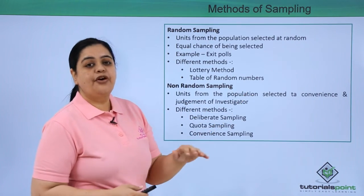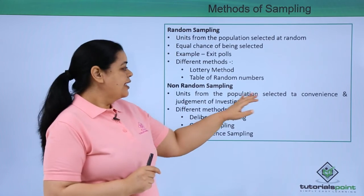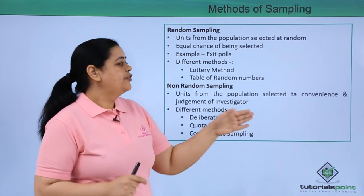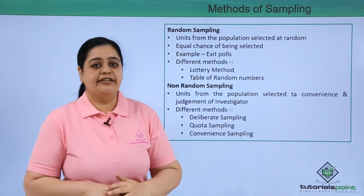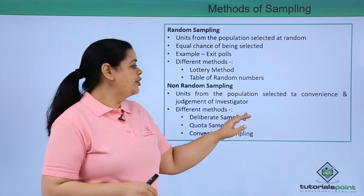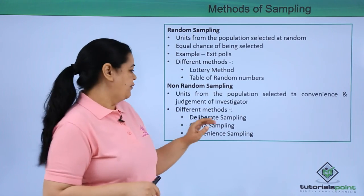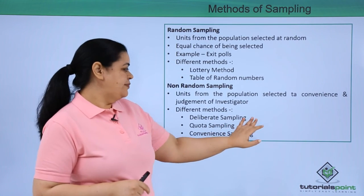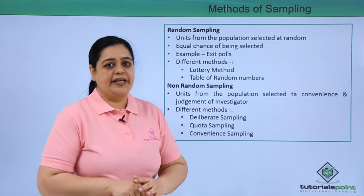Then comes non-random sampling, where the units of the population selected are based on the convenience and judgment of the investigator — it is the investigator who decides which population units are selected. The different methods here are deliberate sampling, quota sampling, and convenience sampling.